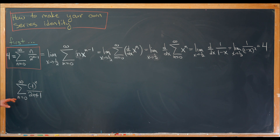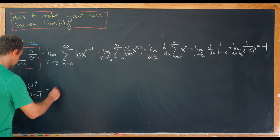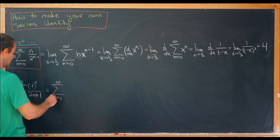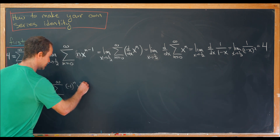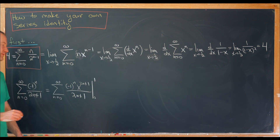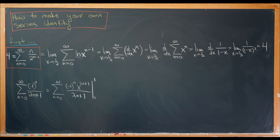Now let's look at the second series: the sum as n goes from 0 to infinity of minus 1 to the n over 2 times n plus 1. Instead of looking like a derivative, this looks like an antiderivative. In fact, this looks like the sum as n goes from 0 to infinity of minus 1 to the n times x to the 2n+1 over 2n+1, evaluated between 0 and 1. Plugging in 0 gives 0 and plugging in 1 gives this sum.